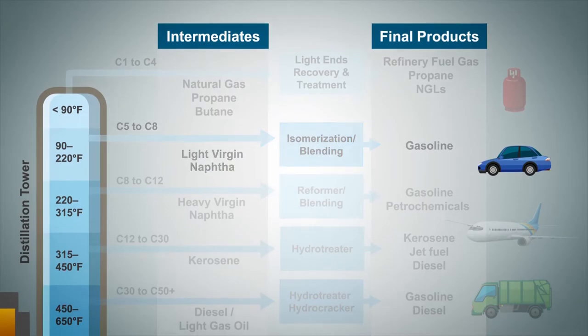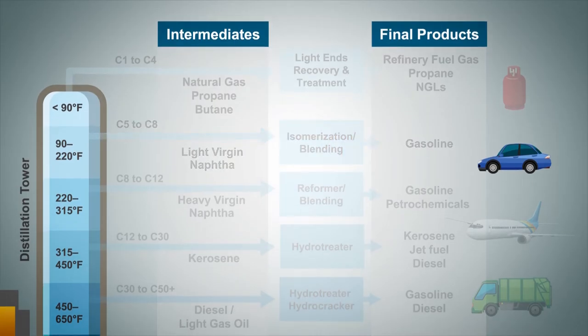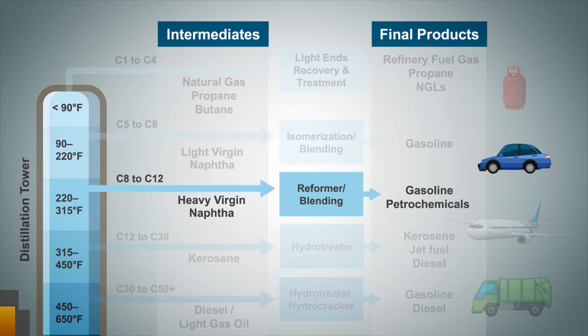Moving down the tower, the next fraction is known as heavy virgin naphtha, which has a boiling point in the range of 220 to 315 degrees Fahrenheit. It can be blended into gasoline, but most refineries will upgrade it through a reforming process before actually blending it into the gasoline pool.